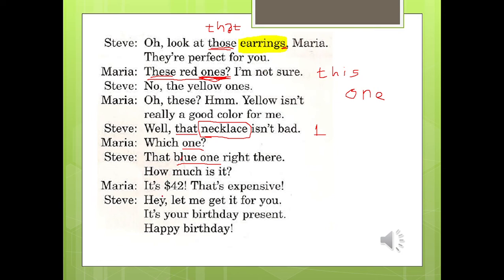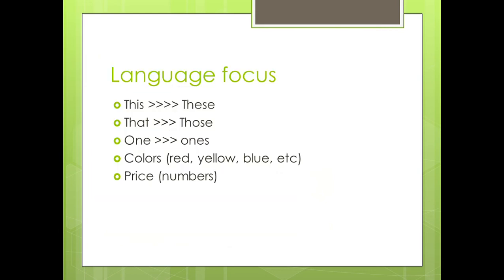'That one. How much is it? It's forty-two dollars. That's expensive. Hey, let me get it for you. It's your birthday present. Happy birthday!' Nah itulah yang bisa digunakan saat berada di pasar. Ringkasnya: 'this' untuk benda tunggal, 'these' untuk benda jamak, 'that' untuk tunggal, 'those' untuk benda jamak, 'one' untuk benda tunggal, 'ones' untuk benda jamak. Ingat, 'one' di sini bukan artinya satu, tapi artinya 'yang' — 'red one' yang merah, 'blue one' yang biru.